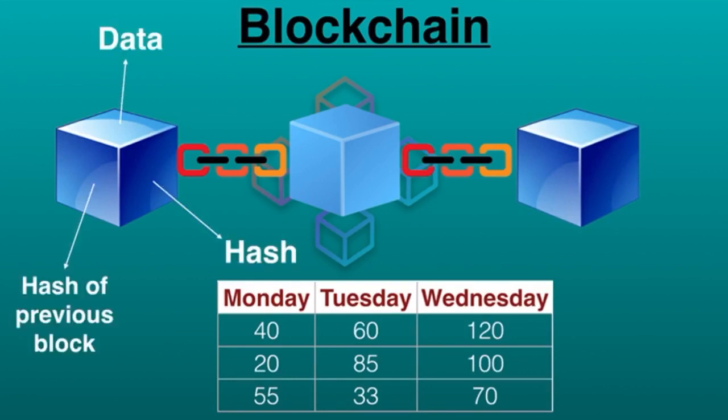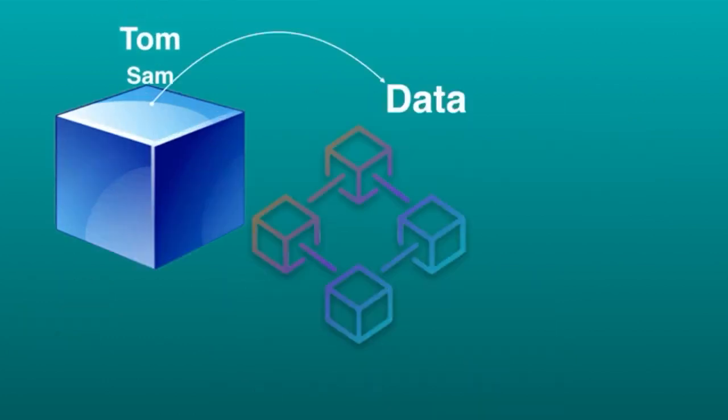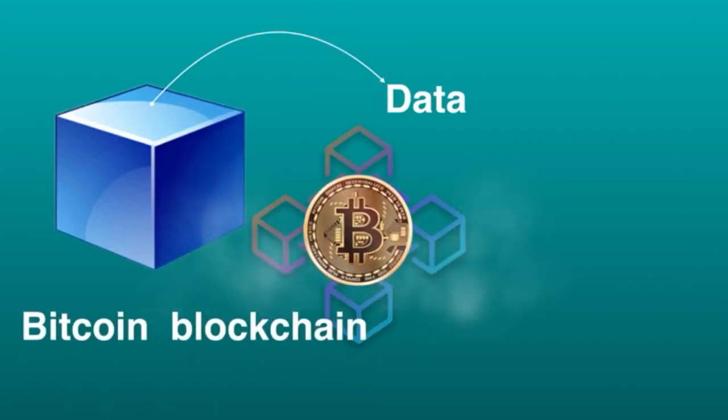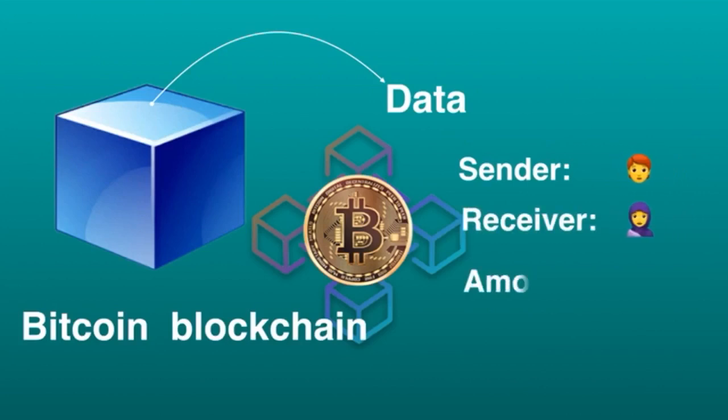Data, hash, and the hash of the previous block. Data that is stored inside a block depends on the type of blockchain being used. For example, Bitcoin, Ethereum, Litecoin, etc. Let's say Bitcoin blockchain. Then it stores the details of transactions such as who is the sender, who is the receiver, and what's the amount.